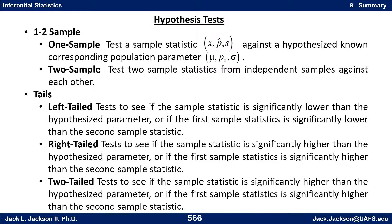In the one sample version, what we're doing is testing a sample statistic such as sample mean, sample proportion, or sample standard deviation — x-bar, p-hat, or s — against a hypothesized known corresponding population parameter: mu, p-naught, or sigma, that is the population mean, proportion, or standard deviation. In the two sample version, we test two sample statistics from independent samples against each other, comparing x-bar-1 to x-bar-2 or p-hat-1 to p-hat-2.